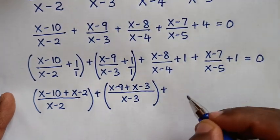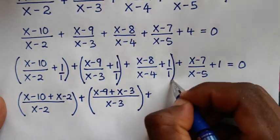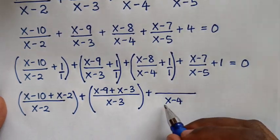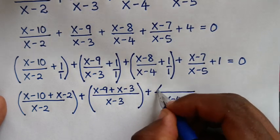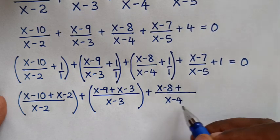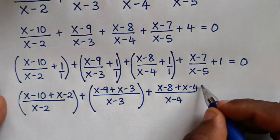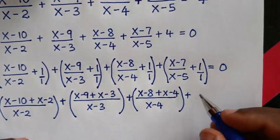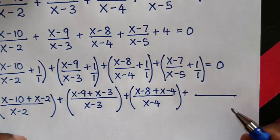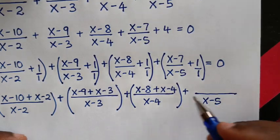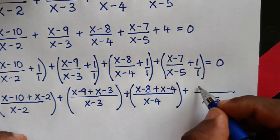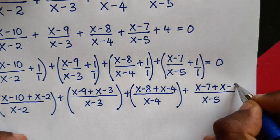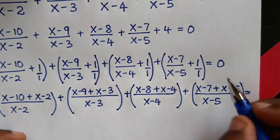Continuing, for the third term the LCM is x minus 4, giving x minus 8 plus x minus 4, over x minus 4. For the fourth term the LCM is x minus 5, giving x minus 7 plus x minus 5, over x minus 5. All of this is equal to 0.